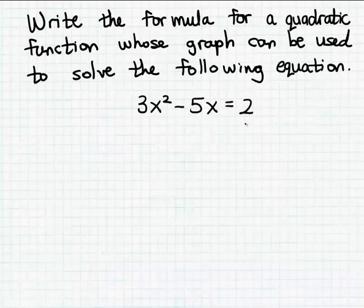and set that equation to 0. So I'm going to do that by subtracting 2 from both sides of this equation. So we get 3x² - 5x - 2 = 0.